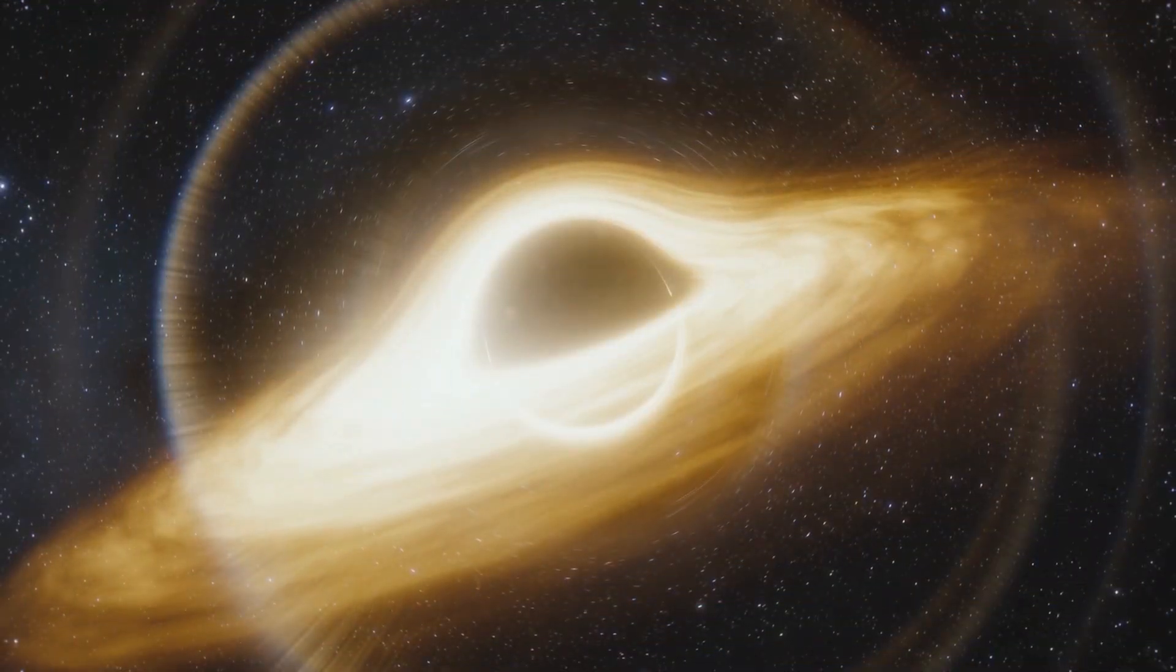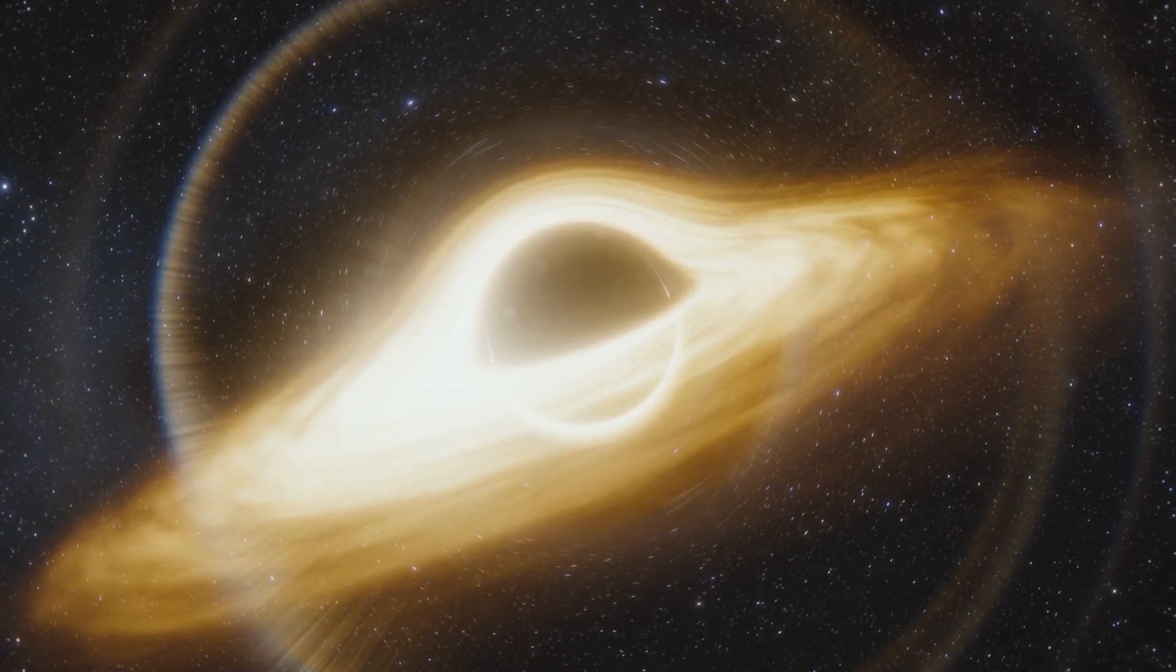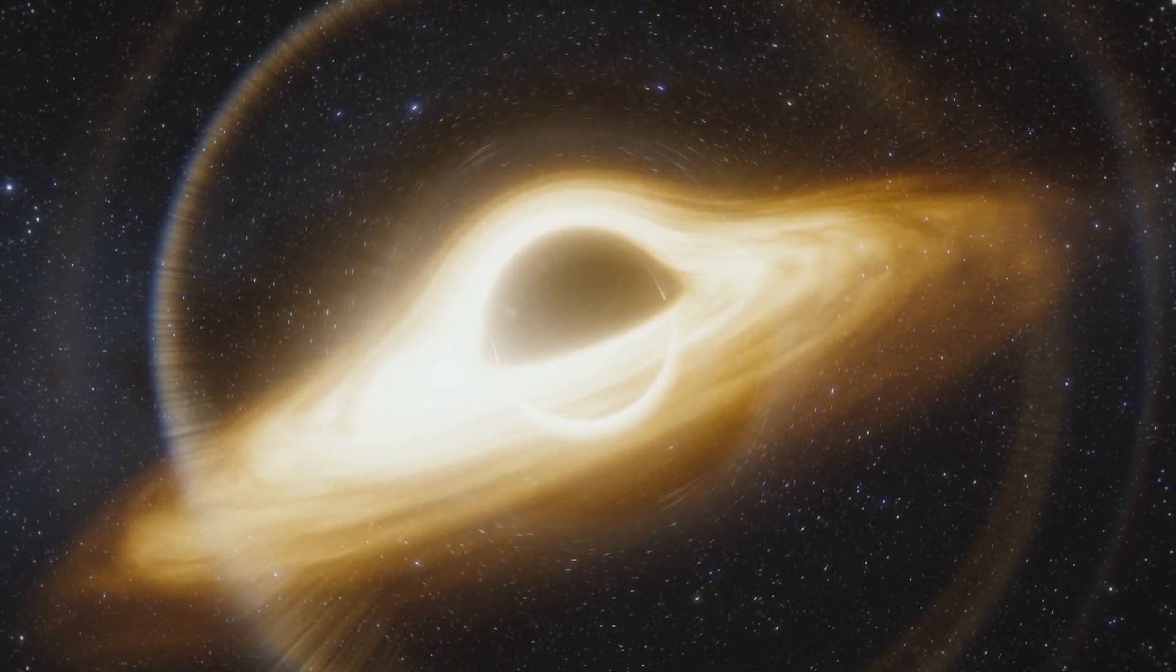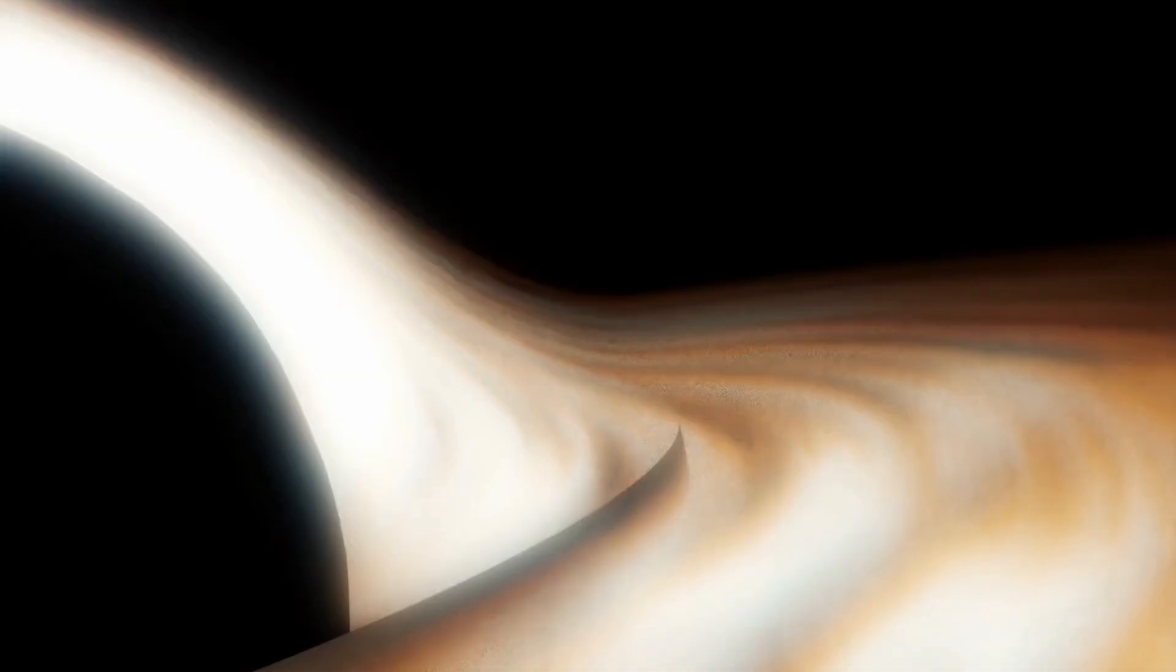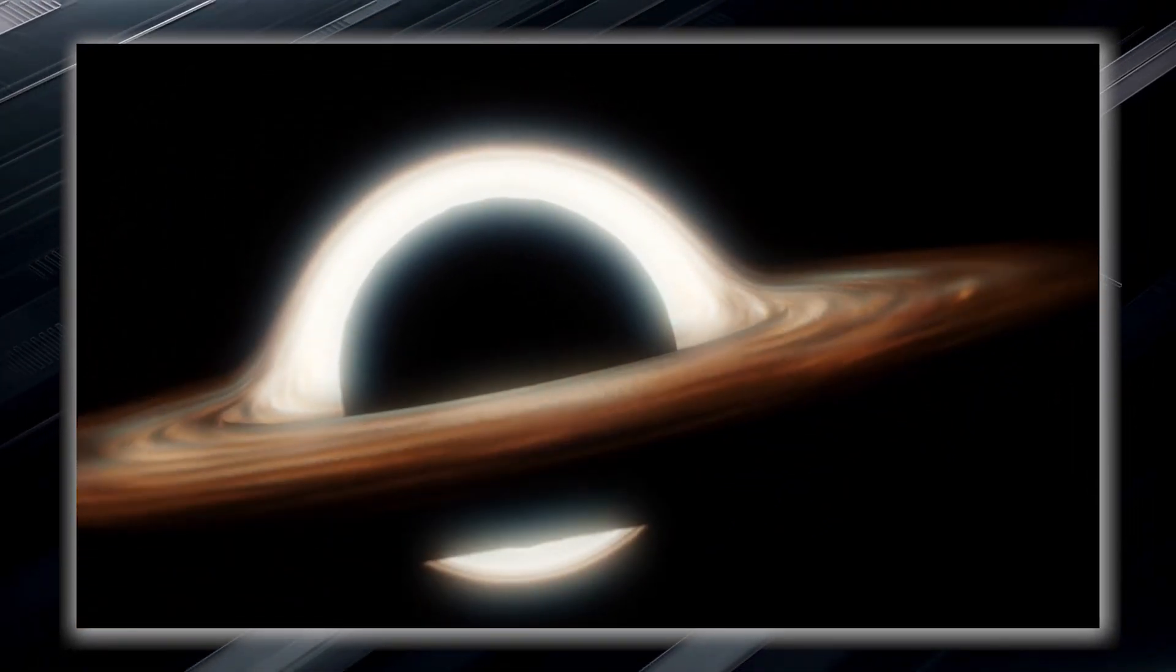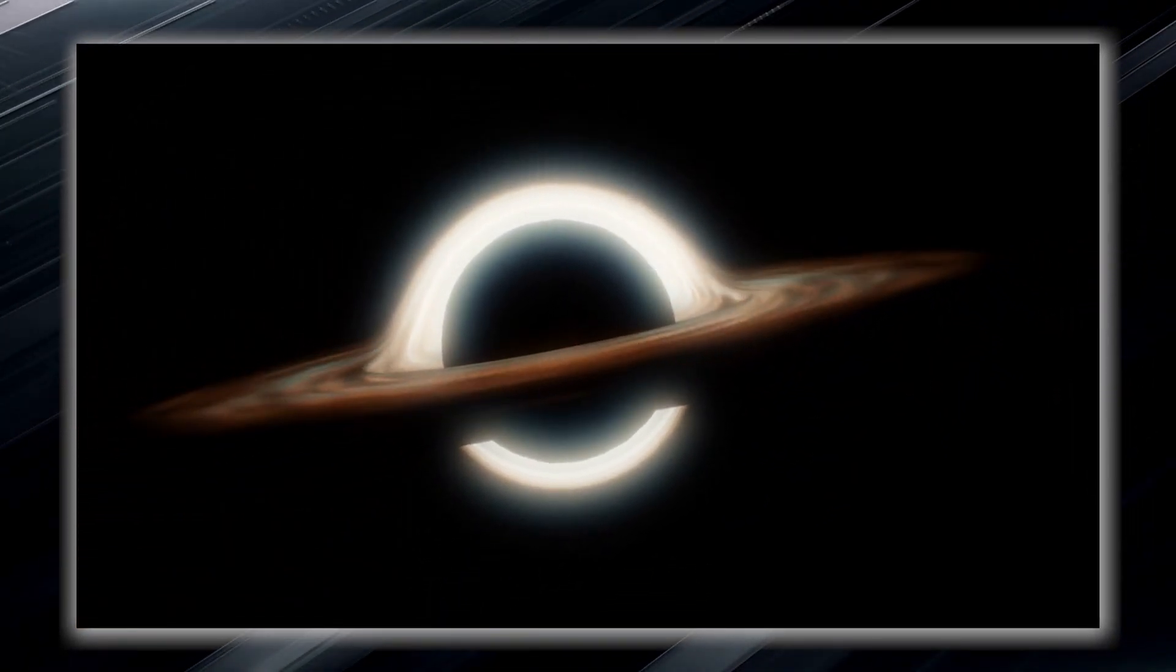This is where things become truly extraordinary. The gravitational pull near a black hole is so incredibly strong that it creates what is known as an event horizon. The event horizon is not a physical barrier, but rather a region where space gradually bends. It is an invisible boundary or point of no return.